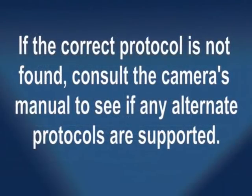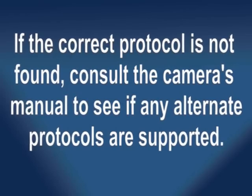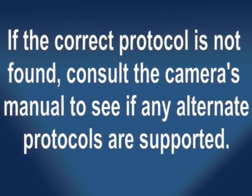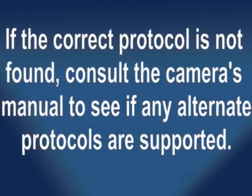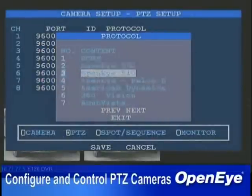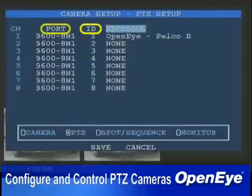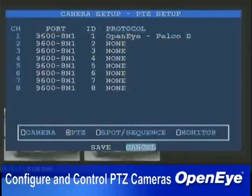If the correct protocol is not found, consult the camera's manual to see if any alternate protocols are supported. After the protocol has been selected, the ID and port settings must be configured. The ID is commonly specified by DIP switches or dials on the PTZ camera, and must be the same on both the camera and DVR.